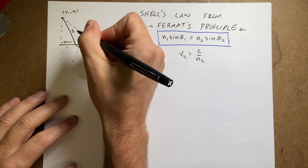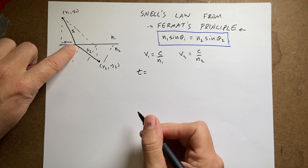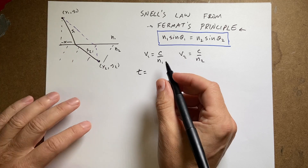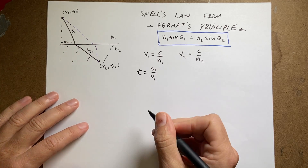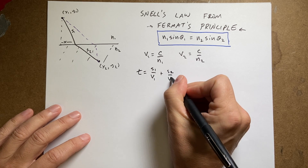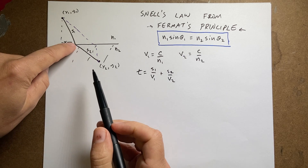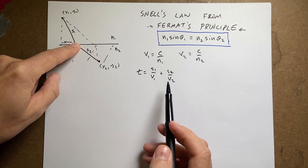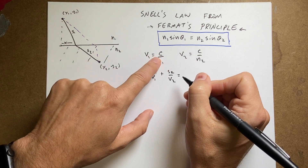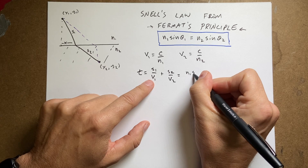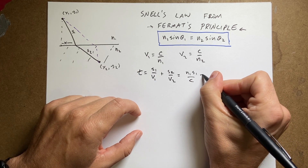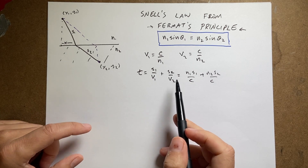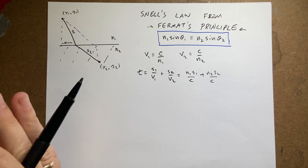Let s1 be the distance in medium 1 and s2 the distance in medium 2. The time along path 1 is s1 divided by v1, and the time along path 2 is s2 divided by v2. Plugging in v1 = c/n1 and v2 = c/n2, I get t = n1·s1/c + n2·s2/c. Now I want to express that time as a function of x so I can apply the max/min approach.